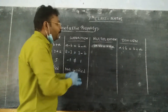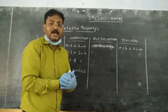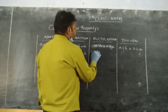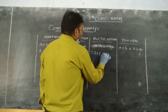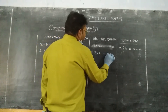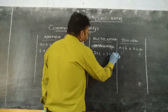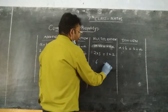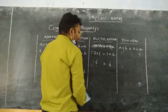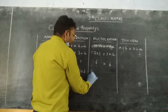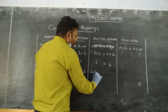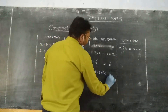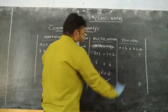Next, commutative property under multiplication. Taking the same two numbers: 2 into 3 equals 6, and 3 into 2 is also 6. So commutative property is satisfied under multiplication.